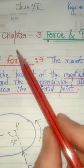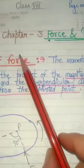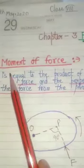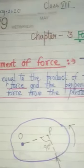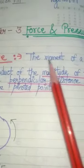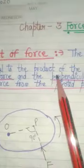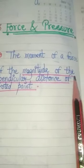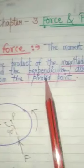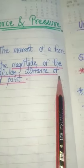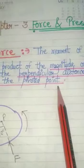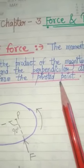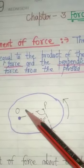Hello students, today we are going to discuss other topics of chapter 3. The first topic is moment of force. The moment of force is equal to the product of the magnitude of the force and the perpendicular distance of the force from the pivoted point. Let us understand this with the help of an example.